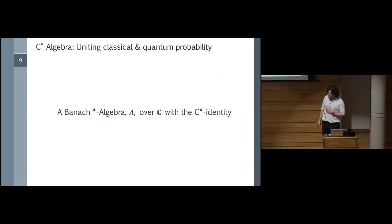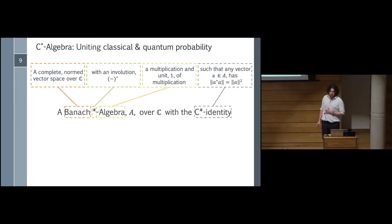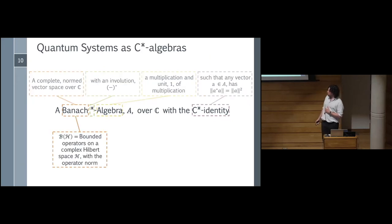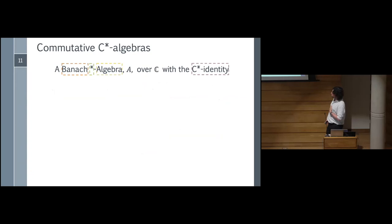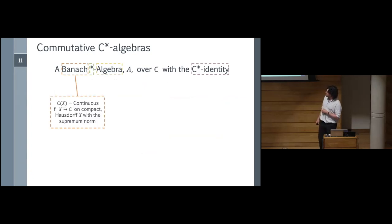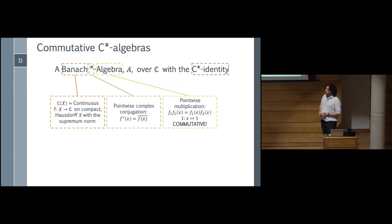A quick review: a C*-algebra is a Banach-star algebra over ℂ with a C*-identity — a complete normed vector space with an involution, a multiplication, and a condition that the algebraic properties line up with the analytic ones. An obvious example is B(H) with adjoints and composition. Another one, equally important, is the space of all complex-valued continuous maps on a compact Hausdorff space X, denoted C(X), where everything is done pointwise. This one is commutative, versus B(H) which is most of the time very much not commutative. In fact, all commutative C*-algebras are isomorphic to C(X) for some compact Hausdorff space X.